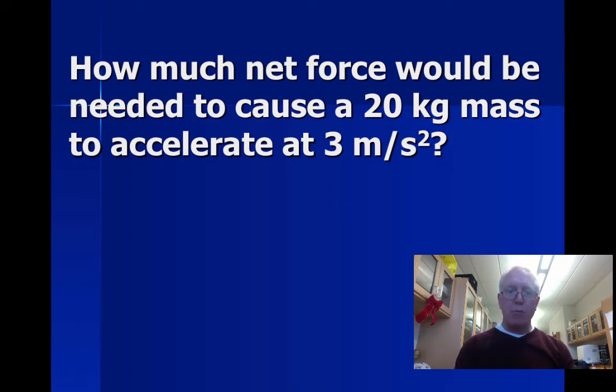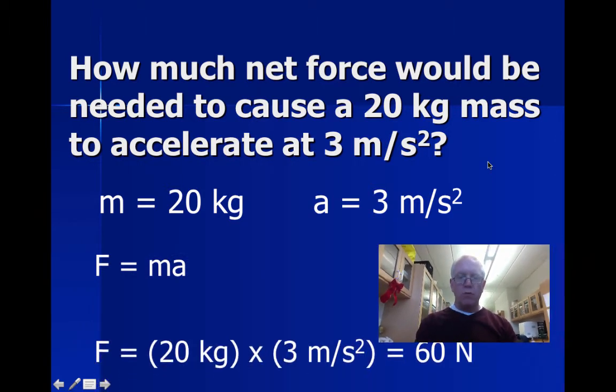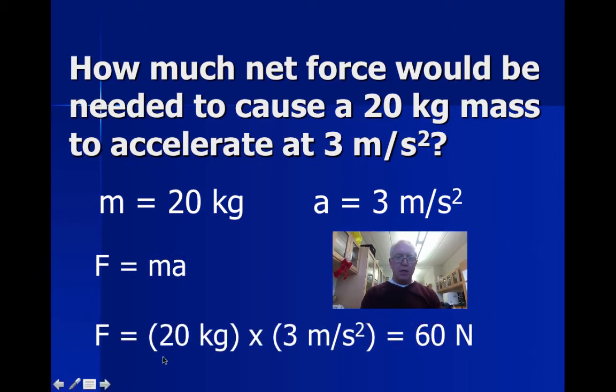Okay, welcome back. We are going to identify our information: we have a mass m of twenty kilograms, acceleration a of three meters per second squared, we are looking for the force. The kilogram meters per second squared is reduced down to the derived unit of newtons. Twenty multiplied by 3 is 60, so 60 newtons is the answer.